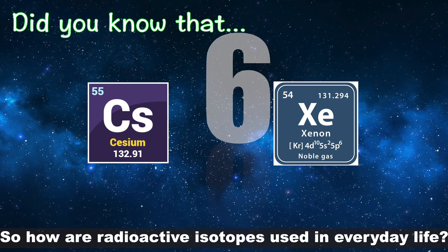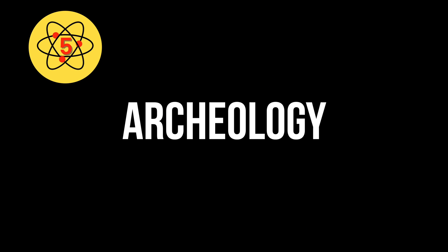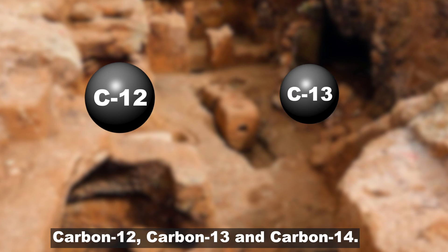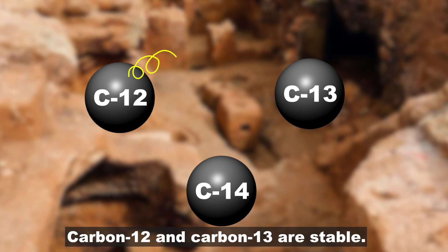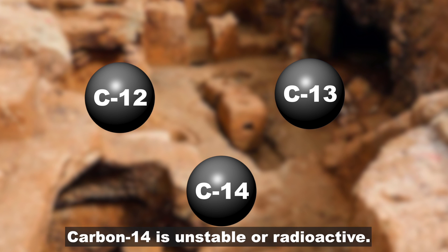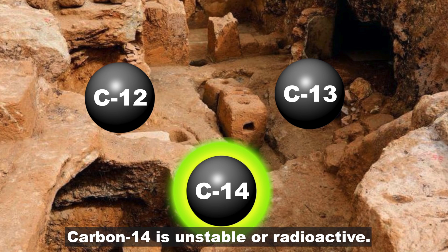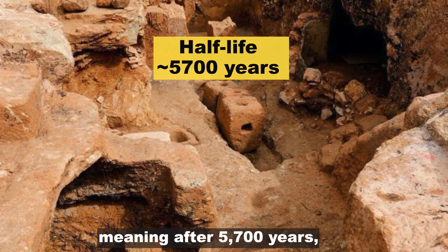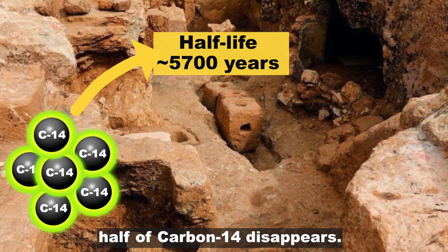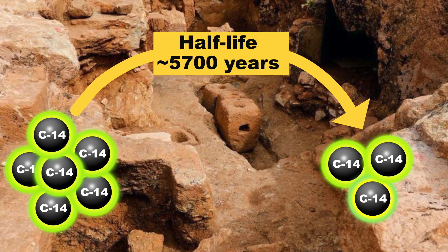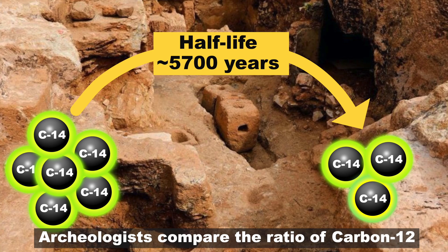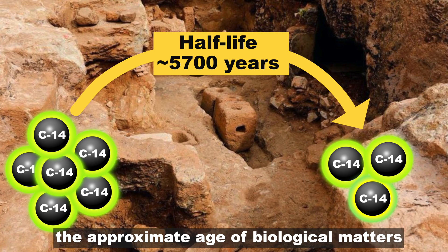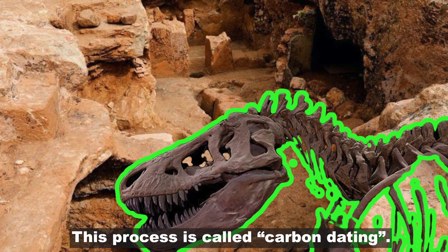So how are radioactive isotopes used in everyday life? Number 5: in archaeology. Carbon has three naturally occurring isotopes — carbon-12, carbon-13, and carbon-14. Carbon-12 and carbon-13 are stable. On the other hand, carbon-14 is unstable or radioactive. Carbon-14 has a half-life of about 5,700 years, meaning after 5,700 years, half of the carbon-14 disappears. Archaeologists compare the ratio of carbon-12 to carbon-14 in order to determine the approximate age of biological matter, such as dinosaur bones. This process is called carbon dating.